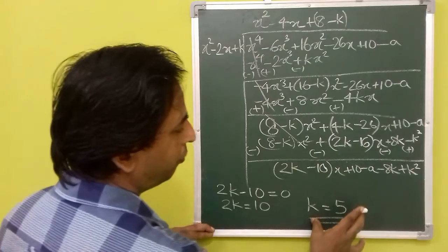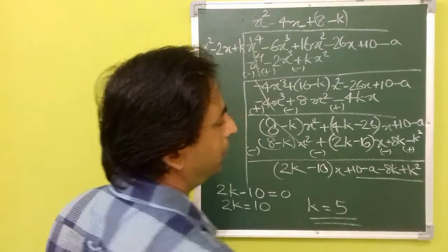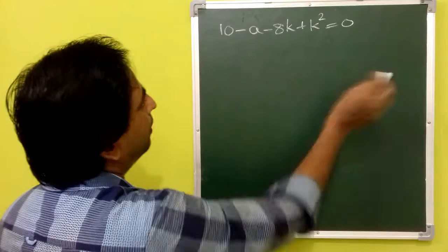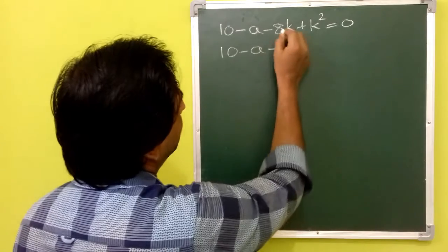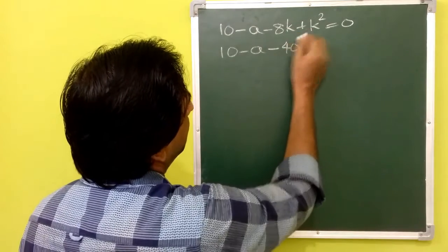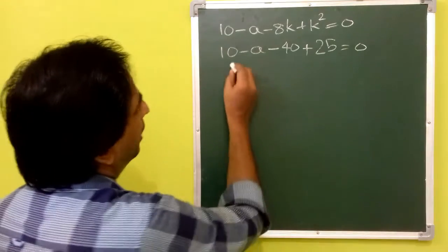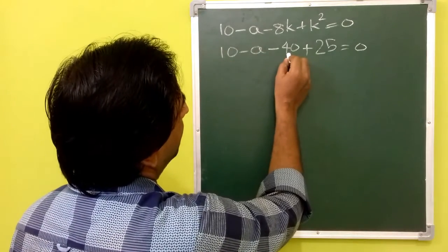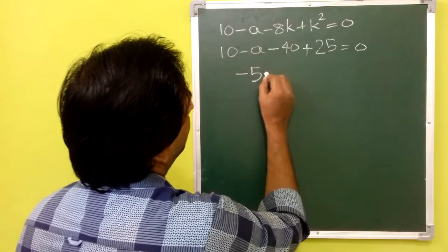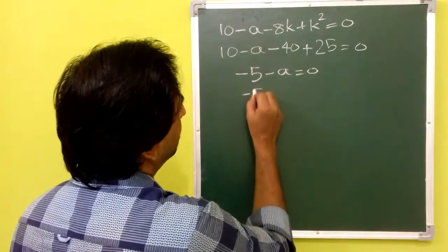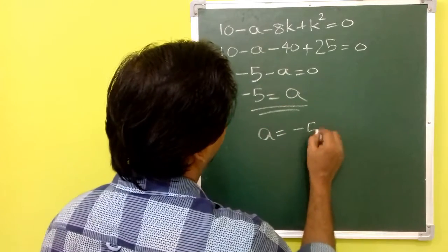So, you got the value of k. Now, we can substitute this value in the other part and equate it to 0 to get the value of a. Substituting k equals 5: 10 minus 8a minus 8 into 5 is 40, plus 5 squared is 25, is equal to 0. That means 10 minus 40 plus 25 is minus 5. Minus a is equal to 0, that means a is equal to minus 5.